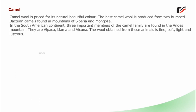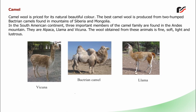Camel wool is prized for its natural beautiful colour. The best camel wool is produced from two-humped Bactrian camels found in the mountains of Siberia and Mongolia. In the South American continent, three important members of the camel family are found in the Andes mountain. They are alpaca, llama and vicuna. The wool obtained from these animals is fine, soft, light and lustrous.